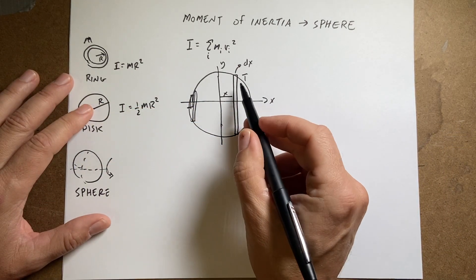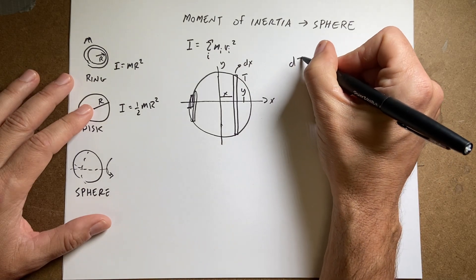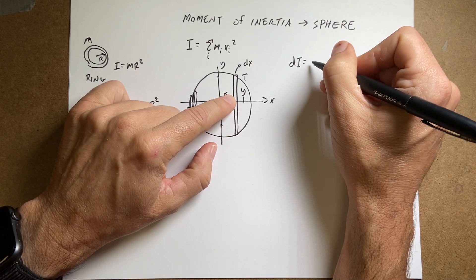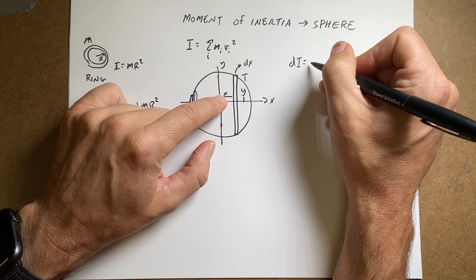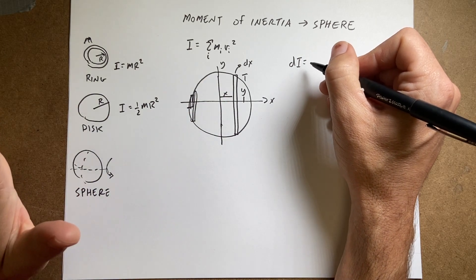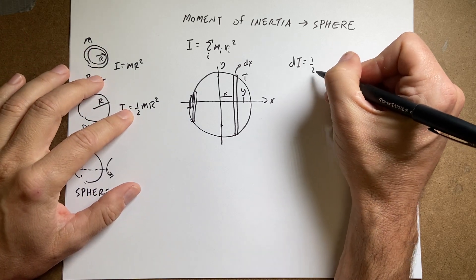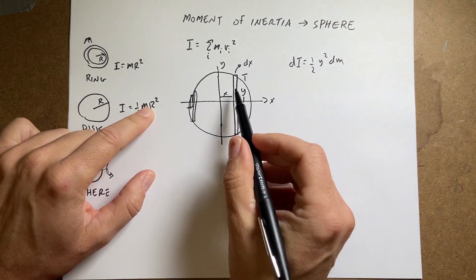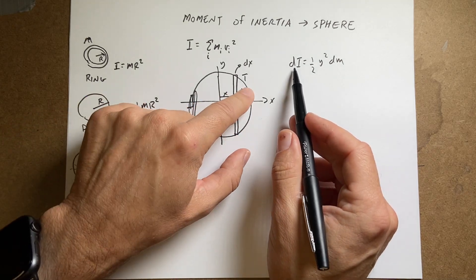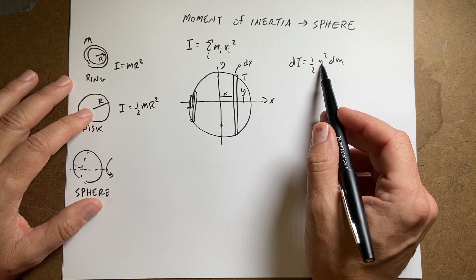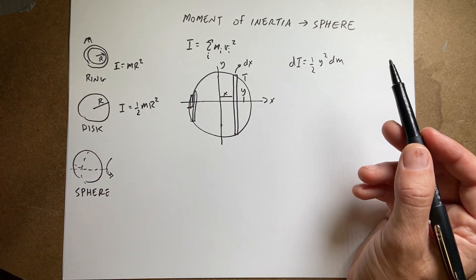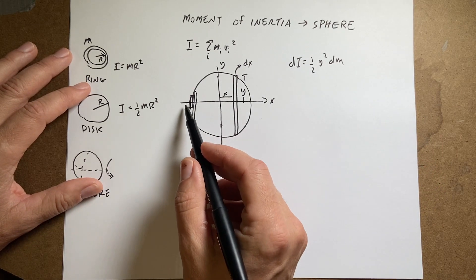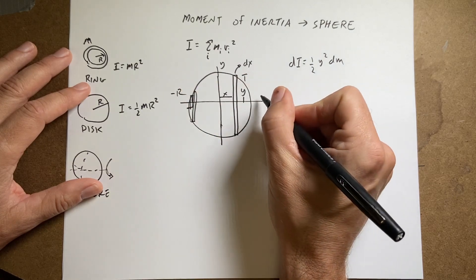I can write the moment of inertia of this one little disk piece as dI equals one-half times y squared times dm — that's the moment of inertia of a disk, where the radius is y and the mass is dm. To integrate this, I'm adding up these disks over x, going from x equals negative r to positive r. So I need to express everything in terms of x.